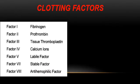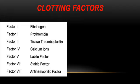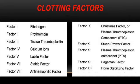Let's have a quick review of the clotting factors. Factor 1 is fibrinogen; factor 2, prothrombin; factor 3, tissue thromboplastin; factor 4, calcium ions; factor 5, the labile factor or pro-accelerin; factor 6 is not assigned a name; factor 7, stable factor or pro-convertine; factor 8, the anti-hemophilic globulin factor; factor 9, Christmas factor or plasma thromboplastin component; factor 10, Stuart-Prower factor; factor 11, plasma thromboplastin antecedent; factor 12, Hagemann factor; and factor 13, the fibrin-stabilizing factor.